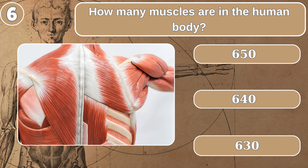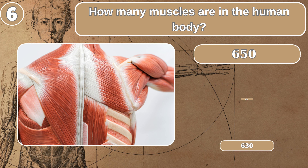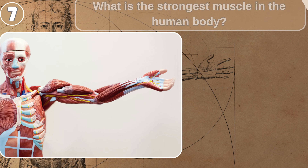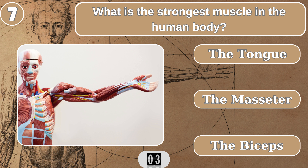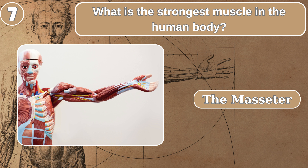How many muscles are in the human body? 650. What is the strongest muscle in the human body? The masseter.